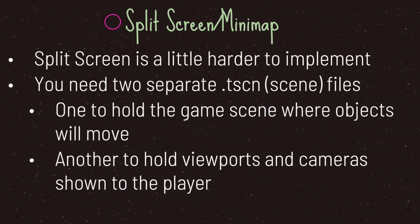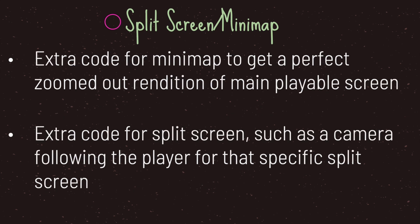The second thing you may want to do is add split screen or a mini map. Keep in mind these are a little harder to implement because you're going to need at minimum two separate scene files: one scene file to hold the game scene where objects move, interact, and behave, and another scene to hold the viewports and cameras. For split screen you'd show each player's view, and for a mini map you'd need a zoomed-out camera. You're going to need extra code to get the zoomed value from the camera node, and extra code for the split screen to align screens based on the root viewport's width and height. For individual players moving separately, you'll need a camera that follows each player.